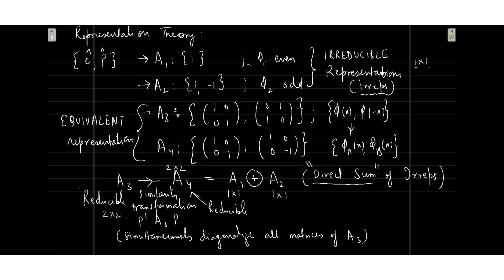We found the third representation A3, which was the higher-dimensional representation. At this point, I said that there exist many representations for the same group element — in fact, you can write infinitely many representations by building higher-dimension ones. Then I came up with a concept called similarity transformation, which is nothing but going from a basis phi X, phi minus X to the basis phi_A(X), phi_B(X) — that is, even and odd functions.